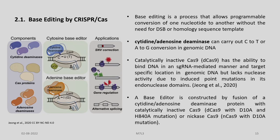Let us start with base editing by CRISPR-Cas9. Here we have various components like cytidine deaminases, Cas9 proteins, and adenosine deaminases. We have the cytosine base editor and the adenine base editor, with corresponding applications like SNP correction, gene regulation, and alternative splicing. Base editing is a process that allows programmable conversion of one nucleotide to another without the need for double-strand breaks or a homology sequence template.